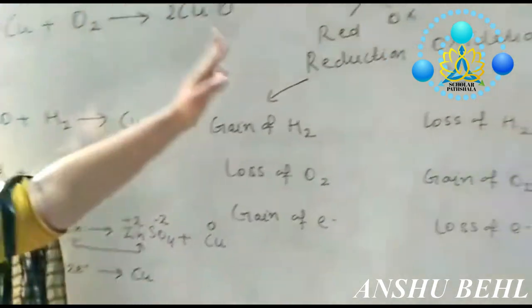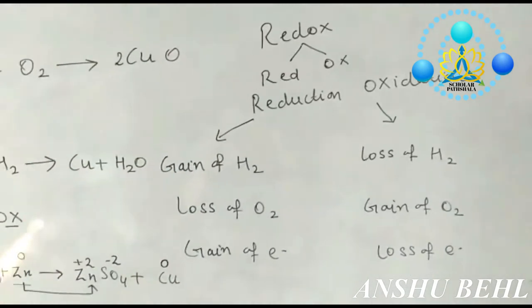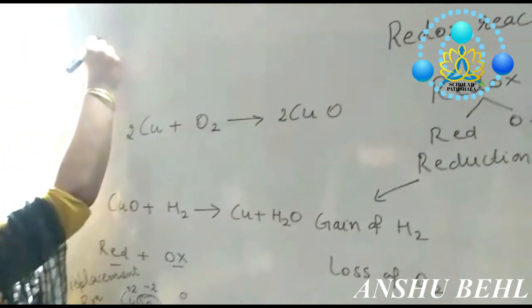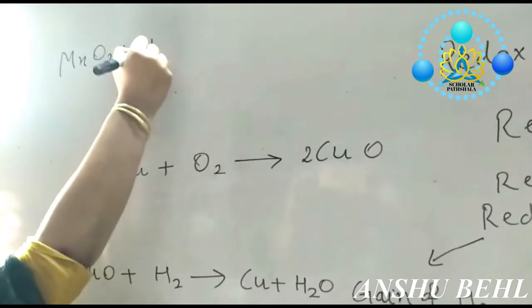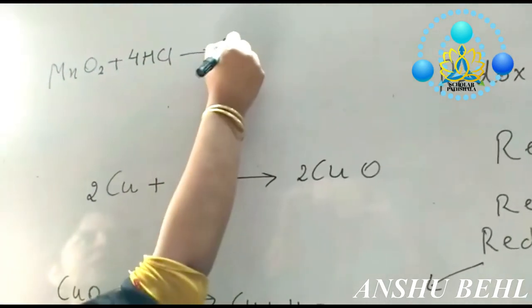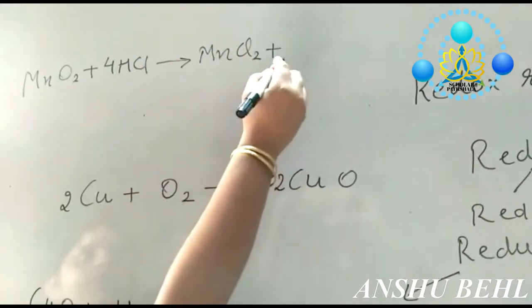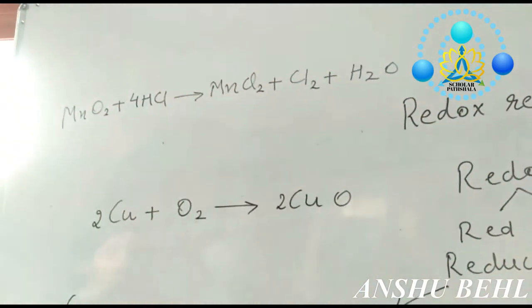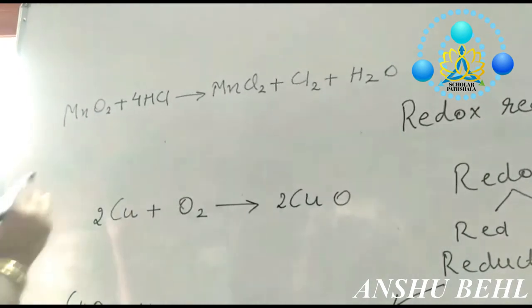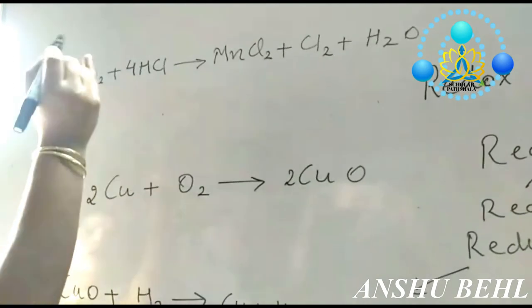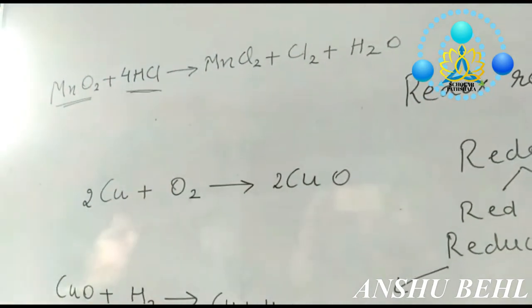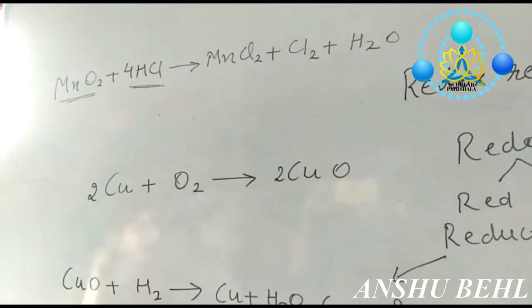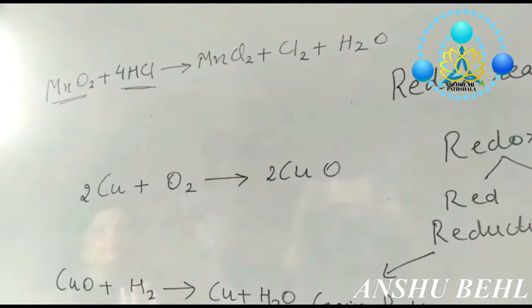Both reduction and oxidation take place simultaneously, and it is termed as redox — reduction and oxidation taking place simultaneously. One more example: we can have manganese oxide reacting with HCl to form manganese chloride plus chlorine plus water. It would be tough to analyze in terms of gain and loss of hydrogen and oxygen, so we will do it in terms of the electron concept.